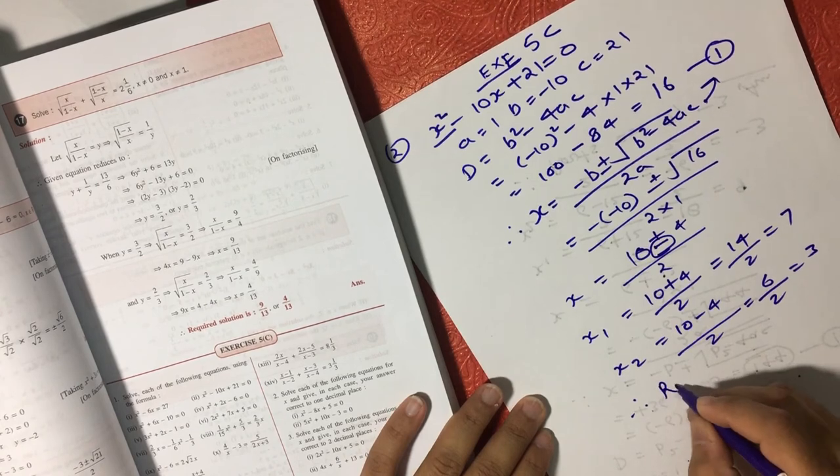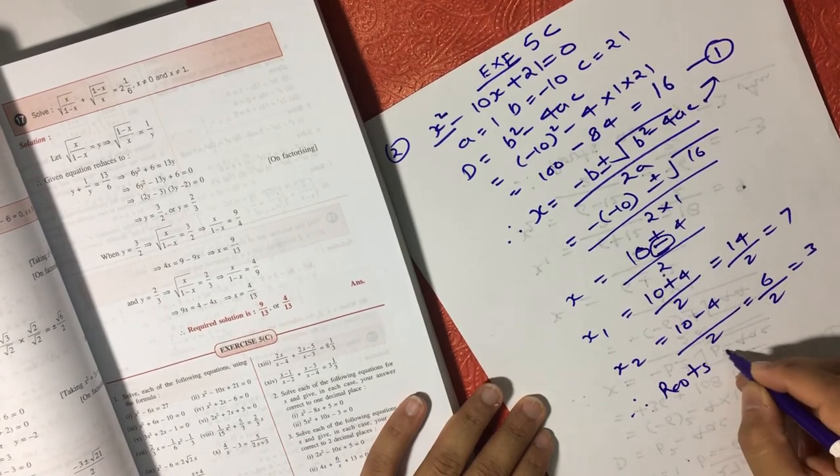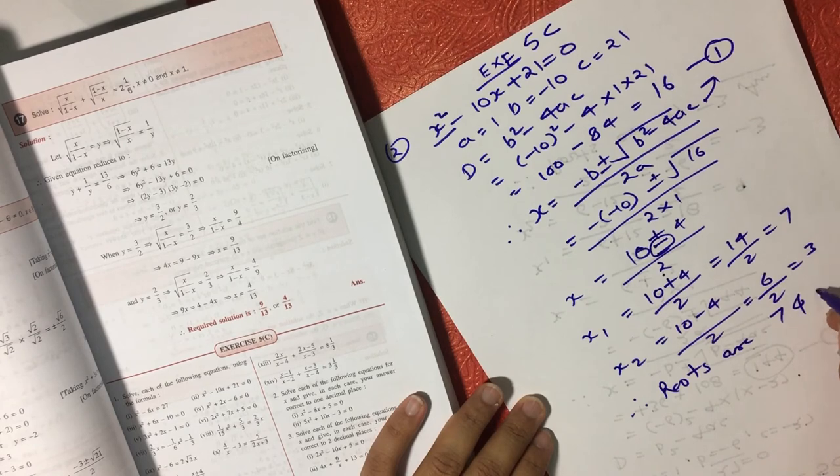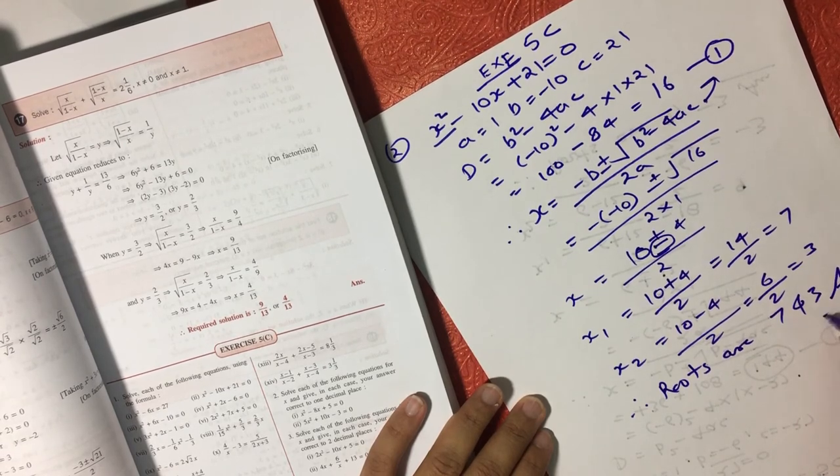So we have two values of x here. We can say the roots are 7 and 3, and that's your answer.